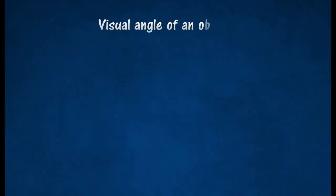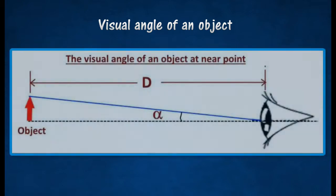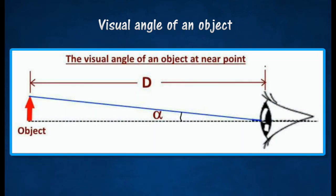When an object of height h₀ is seen clearly at a distance d equal to 25 cm from the unaided eye, the visual angle is alpha. The image of the object formed at the retina is small since alpha is small.